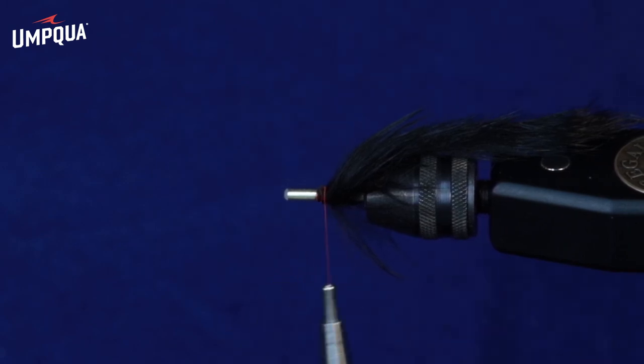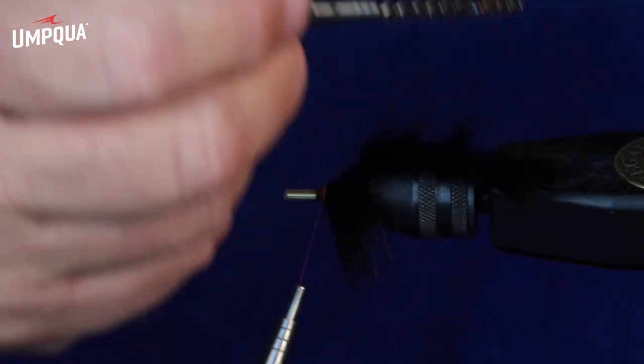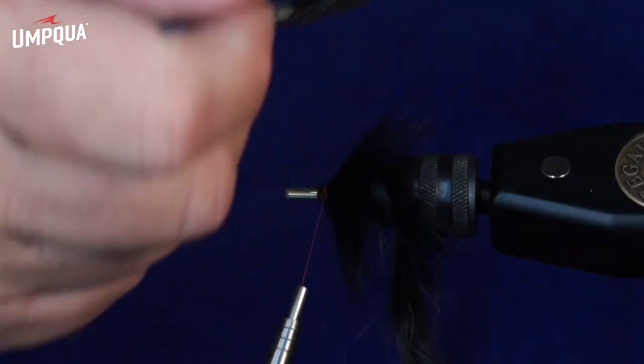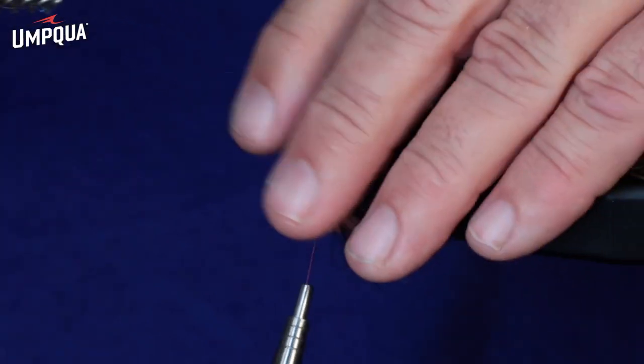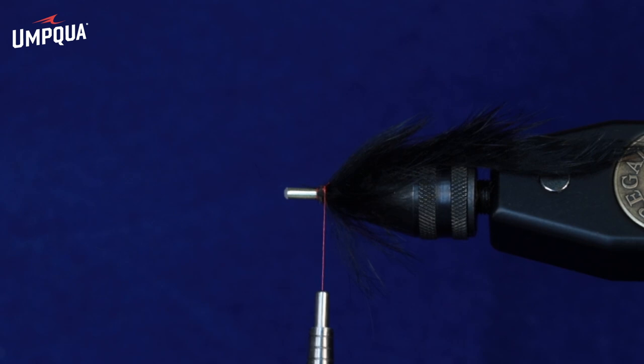Okay. Then once you get to this point, what you want to do is you want to relieve any of the trapped rabbit with a brush, stroke it up, and that right there is our tail.